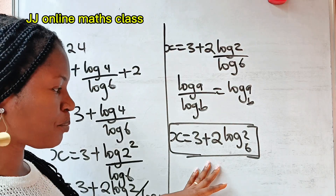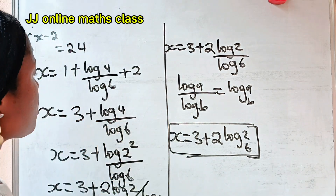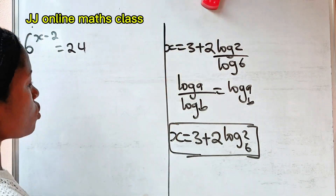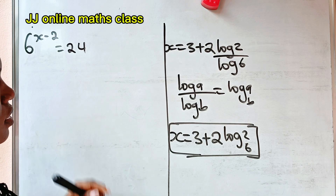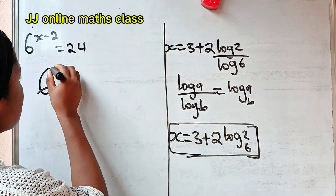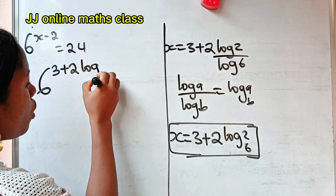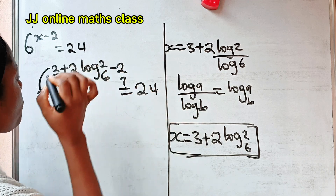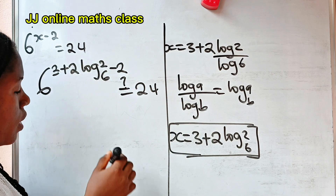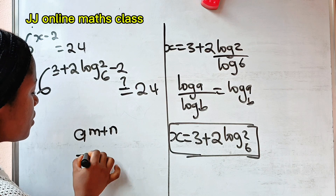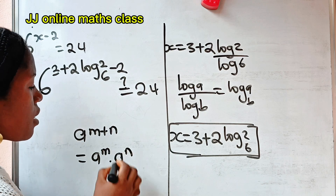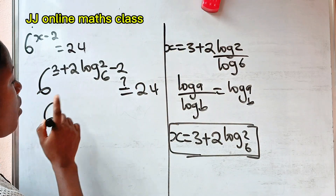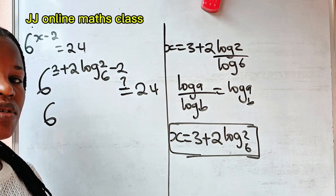Now it is time to prove that the answer we got is correct. The question says 6 to the power of x minus 2 is equal to 24. So substituting x as 3 plus 2 log 2 base 6, we have 6 to the power of 3 plus 2 log 2 base 6, minus 2. Recall that a to the power of m plus n equals a to the power of m multiplied by a to the power of n. Since 3 minus 2 gives us 1, we simplify the exponent to 1 plus 2 log 2 base 6.